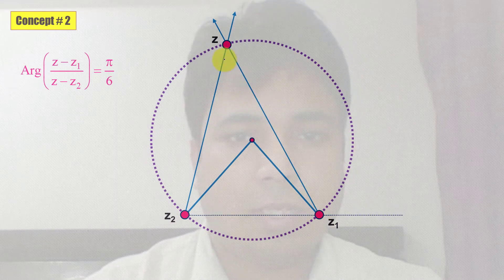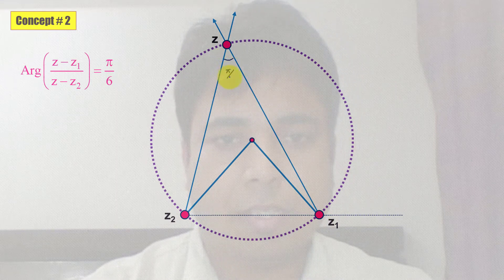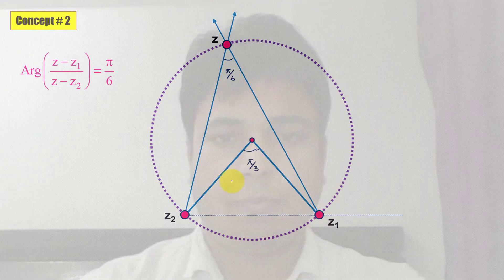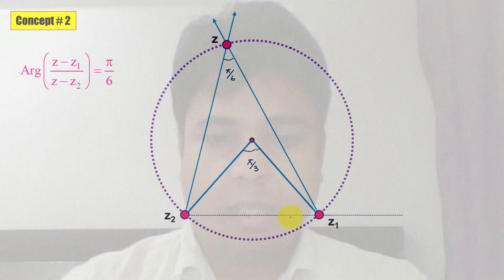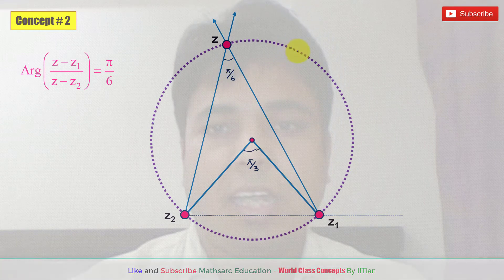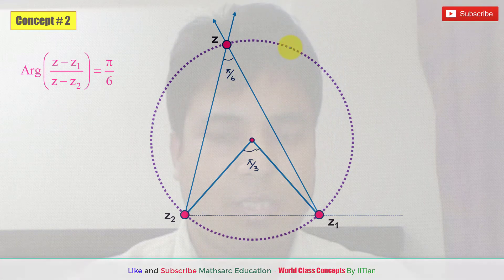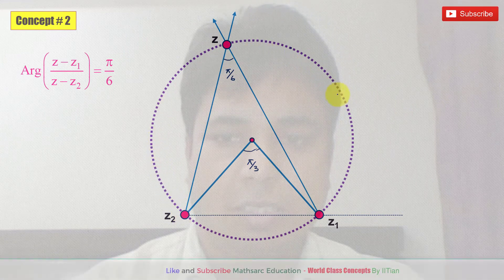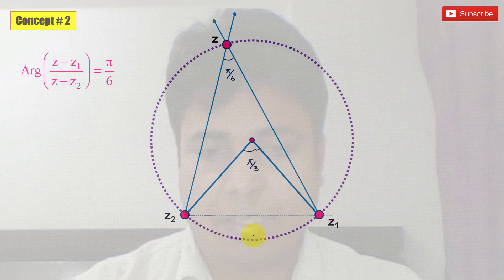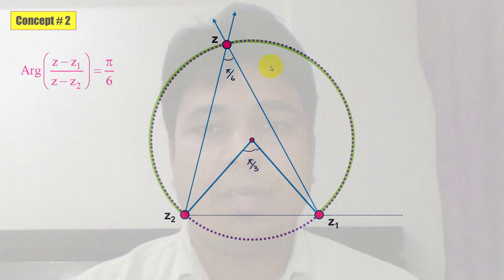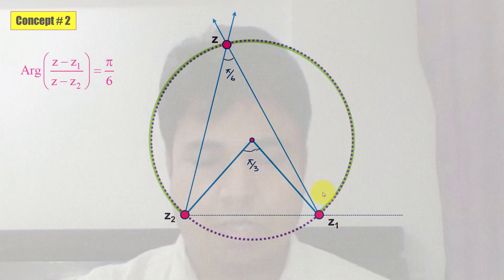As observed, this angle is π/6, so the central angle becomes π/3. By the inscribed angle theorem, the chord Z1Z2 subtends an angle π/6 at the circumference. Therefore, the locus of Z is the major arc of the circle on which Z1 and Z2 lie — Z lies on this major arc.